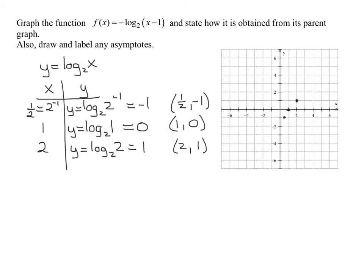Now remember the shape of logarithmic graphs. The y-axis, or the vertical line x equals 0, is a vertical asymptote. And the graph cannot touch it or cross it.